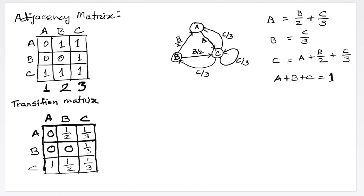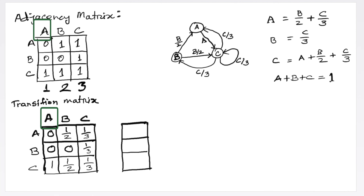The transition matrix is a column stochastic matrix, meaning that the summation of each column of the transition matrix will be one. In the beginning, when we don't have any idea about what the importance values or page rank values of each website would be, we have to consider that all websites have equal importance.